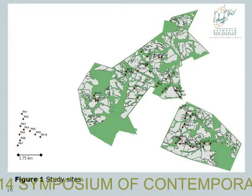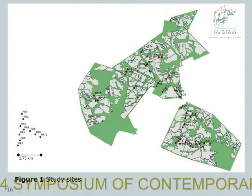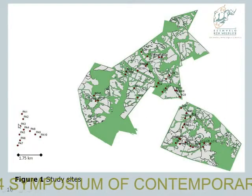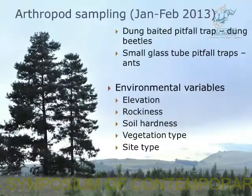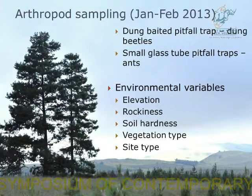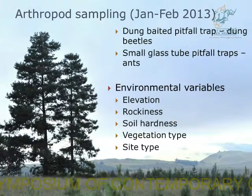This is a map of my study sites — these are in the estates and this is in the nearby protected area. Sampling took place in January and February 2013. I used dung-baited pitfall traps for sampling dung beetles and small glass tube traps for sampling ants. The environmental variables I also used in my analysis were elevation, rockiness, soil whiteness, vegetation type, and site type.